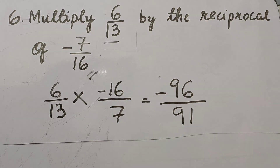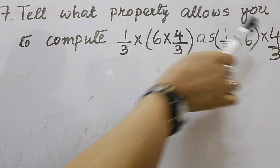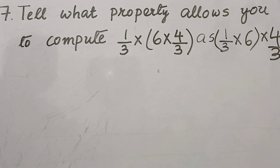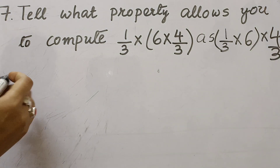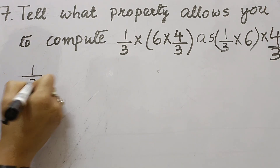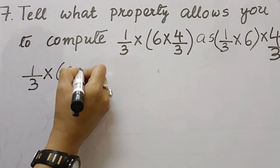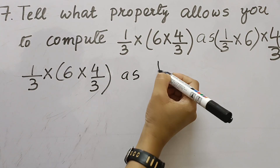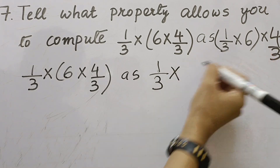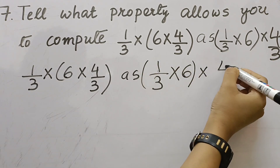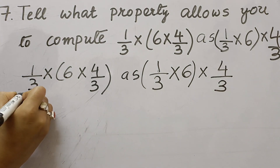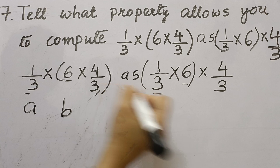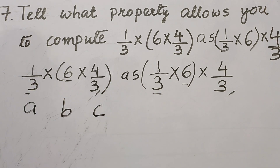Question 7: Tell what property allows you to compute 1/3 × (6 × 4/3) as (1/3 × 6) × 4/3. We take A = 1/3, B = 6, and C = 4/3. The expression is regrouped from A × (B × C) to (A × B) × C.